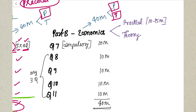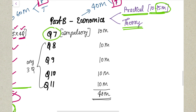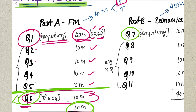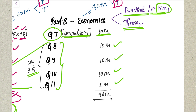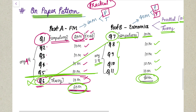Moving on to the Economics paper: practical is asked for a minimum of 10 marks guaranteed in every examination, and it can extend up to a range of 15 to 20 marks. Question Number 7 is the first compulsory question of Economics, coming for 10 marks. From the remaining four questions, any three questions you have to attempt, each for 10 marks, giving you 40 marks in total. This is your FM-Eco question paper pattern.